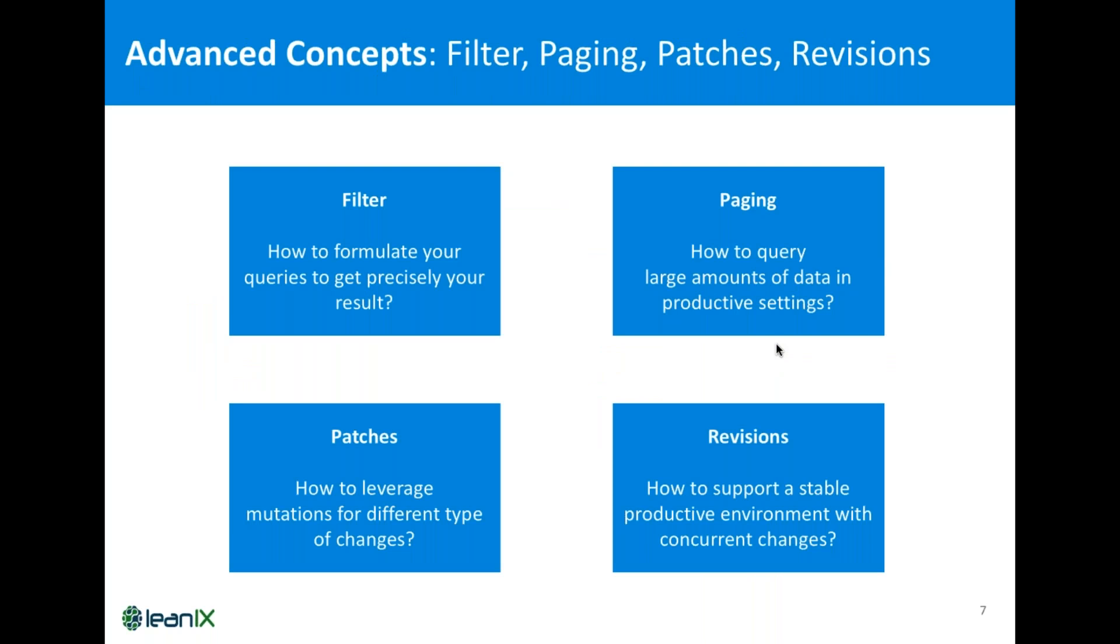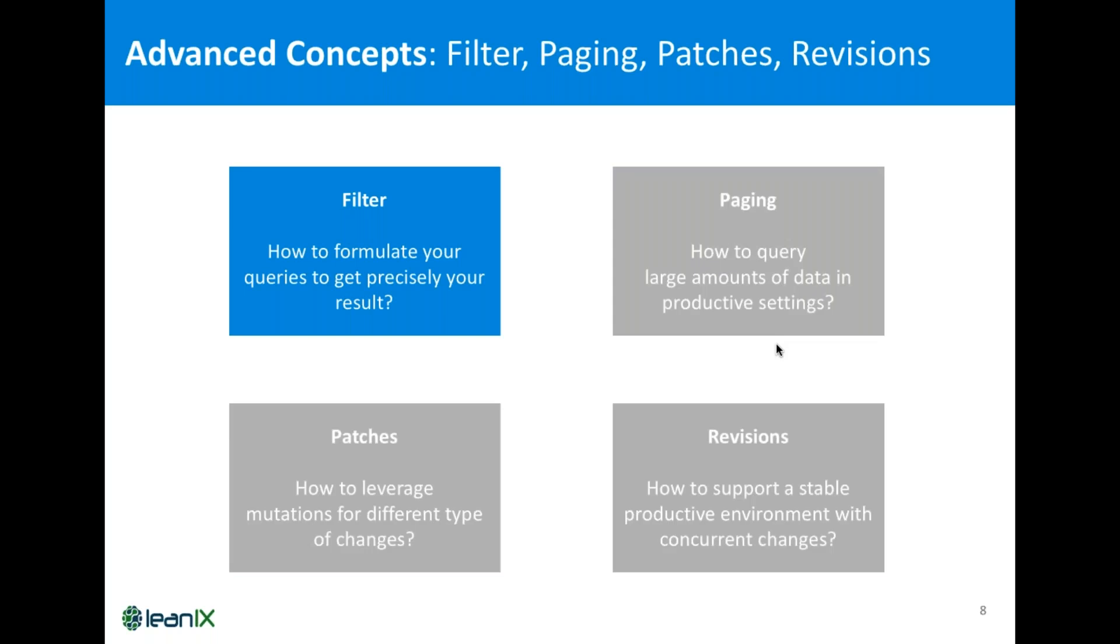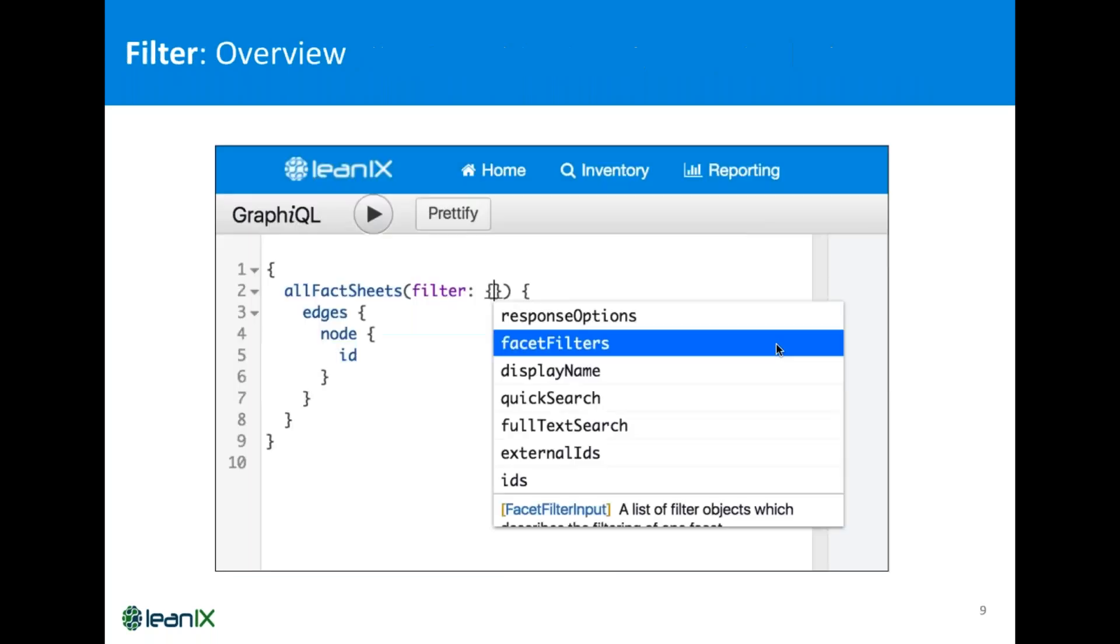So, let's get started. We will talk about filter and paging which are query concepts. Filter helps you to know how to get your data in the way you want while paging helps you to deal with large amount of data. And then, we will talk about mutation concepts like patches to make the different mutations in the way you want and like revisions to deal with concurrent changes. So, starting with filter, I will first walk you through some of the basic filters and then get more advanced. So, for now, I use the All Factsheet query as illustration. The other queries you find in LeanIX are similar like All Tags or All Subscriptions.